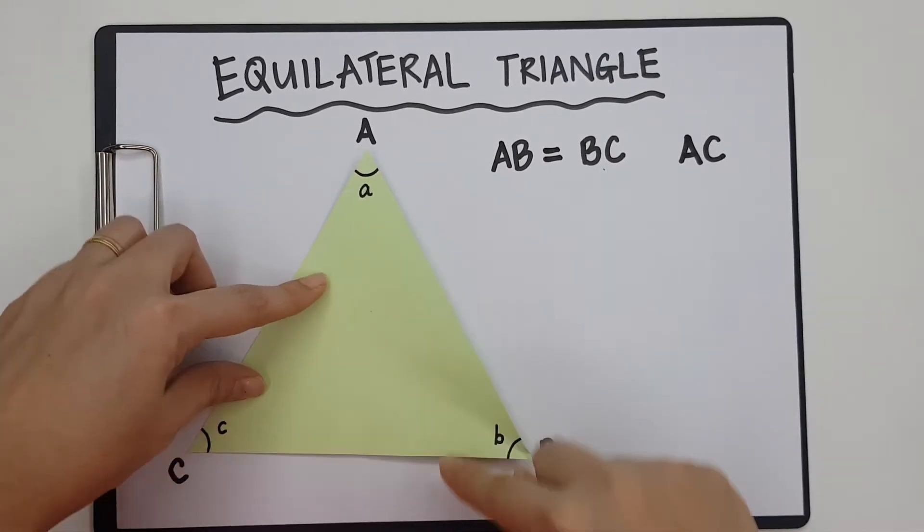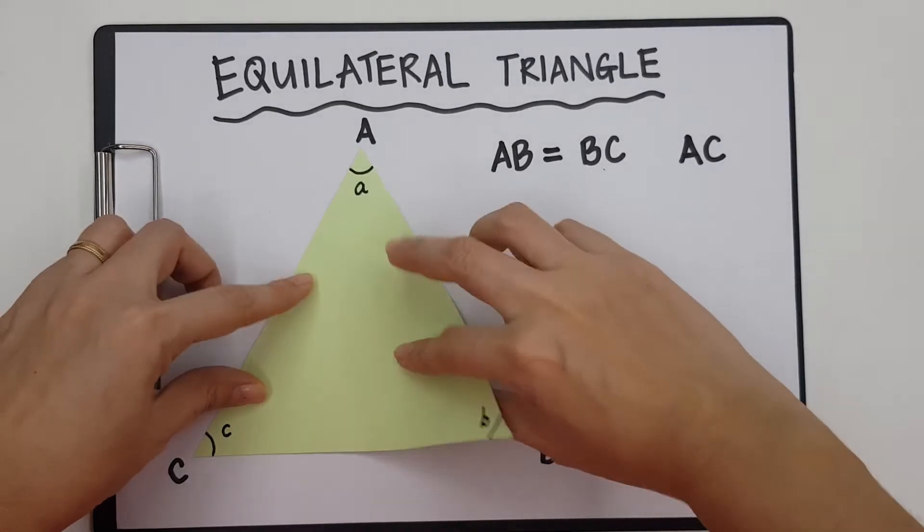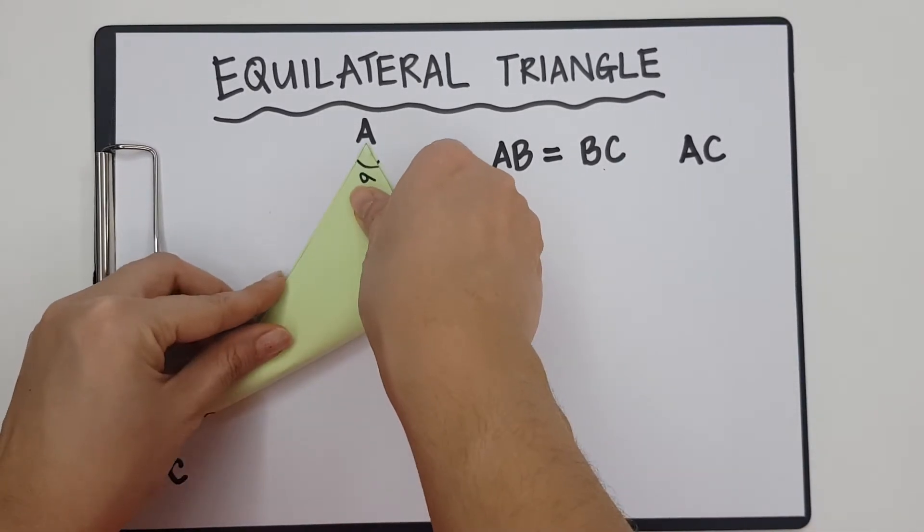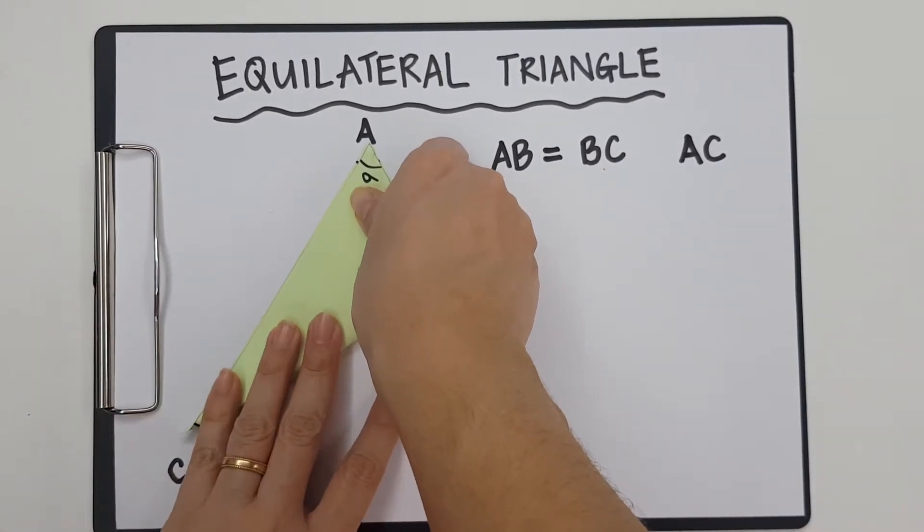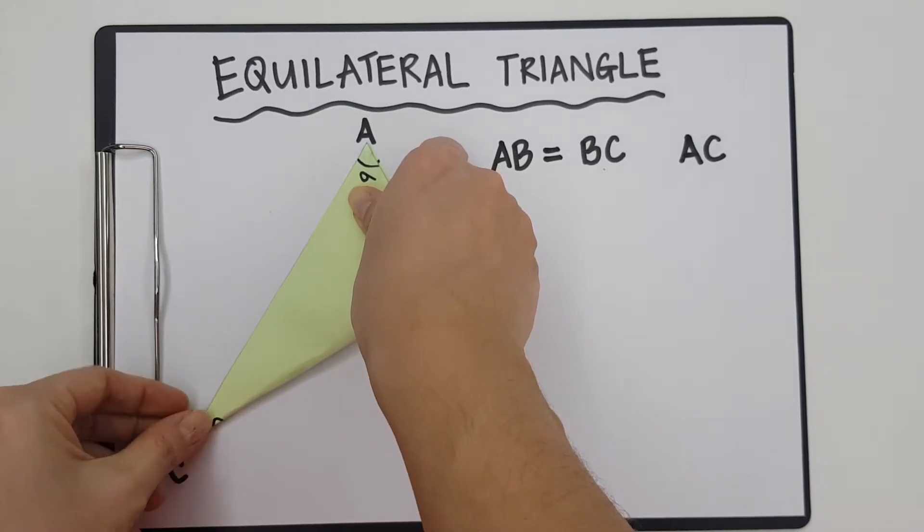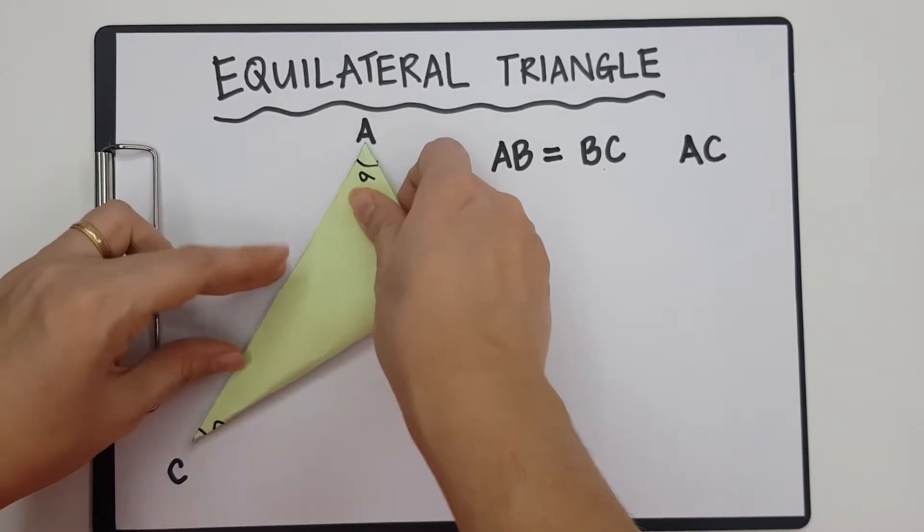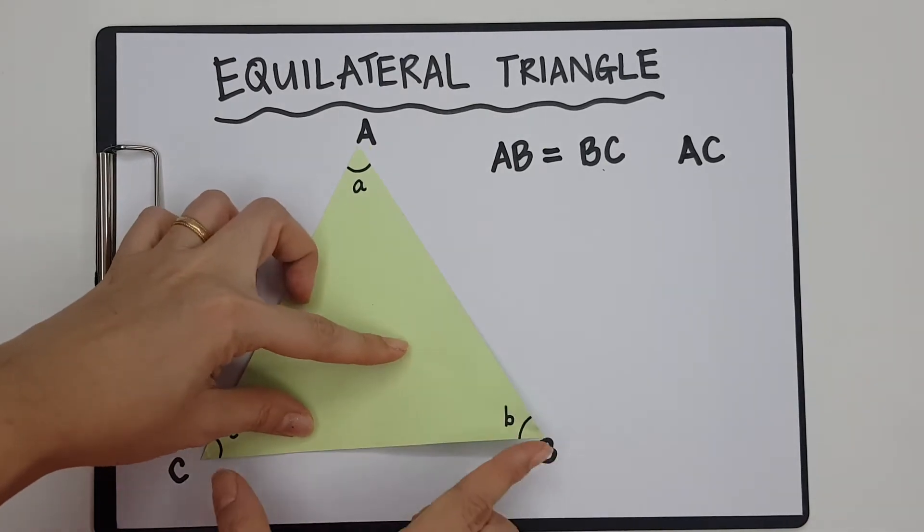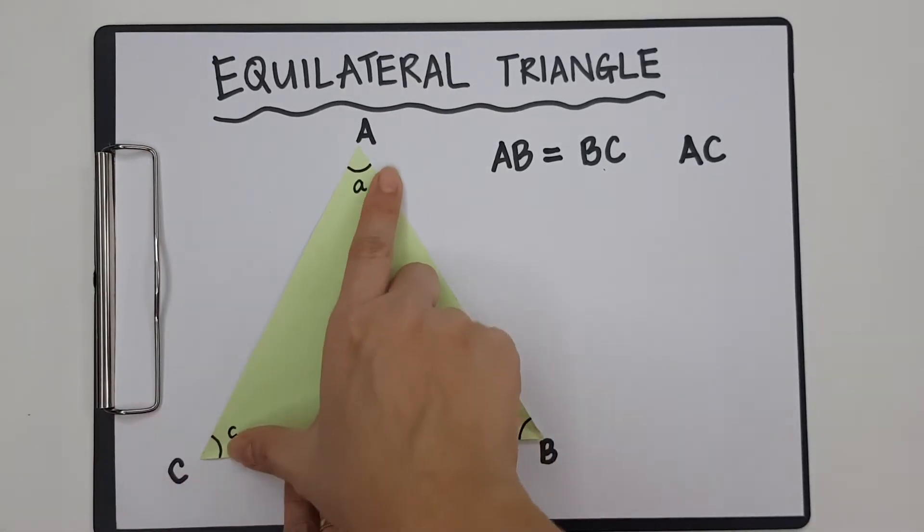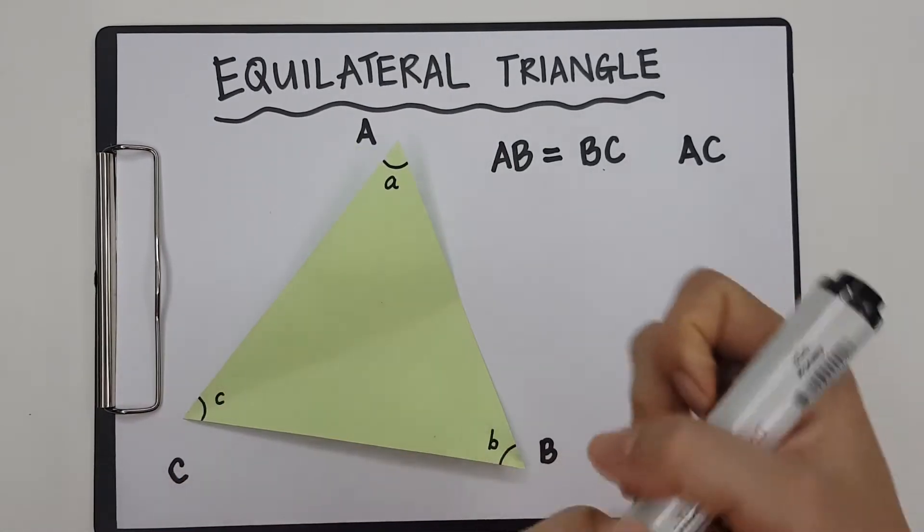So now I'm going to compare this BC with AC, and I'm going to fold it here. As you can see, the lengths are exactly the same. So I can see that the length BC is the same as length AC. So here's what I'm going to write.